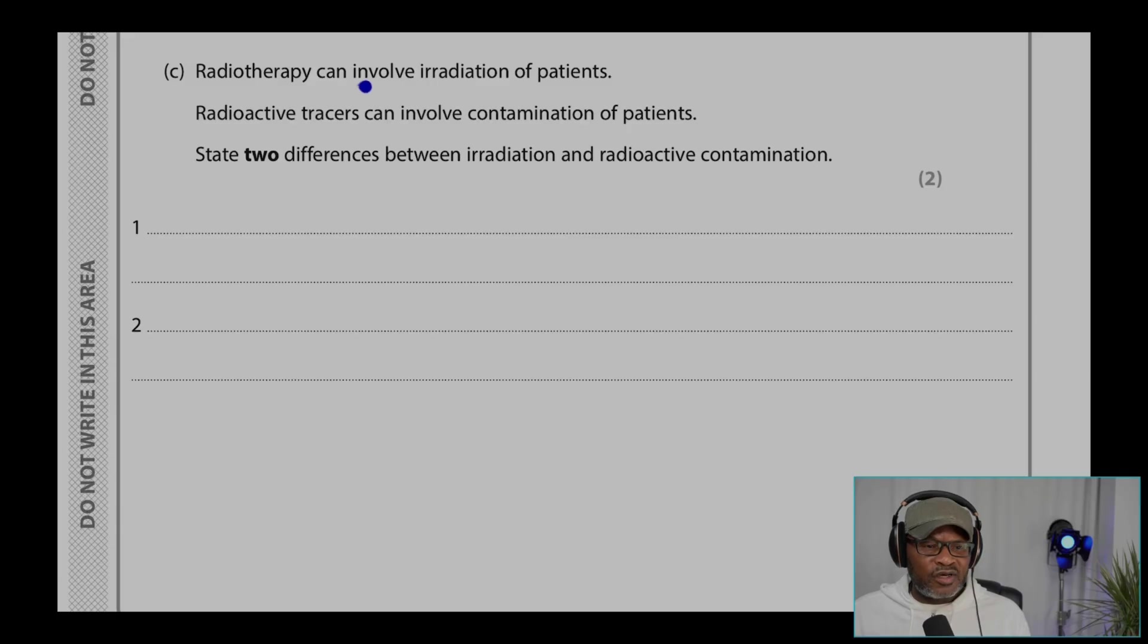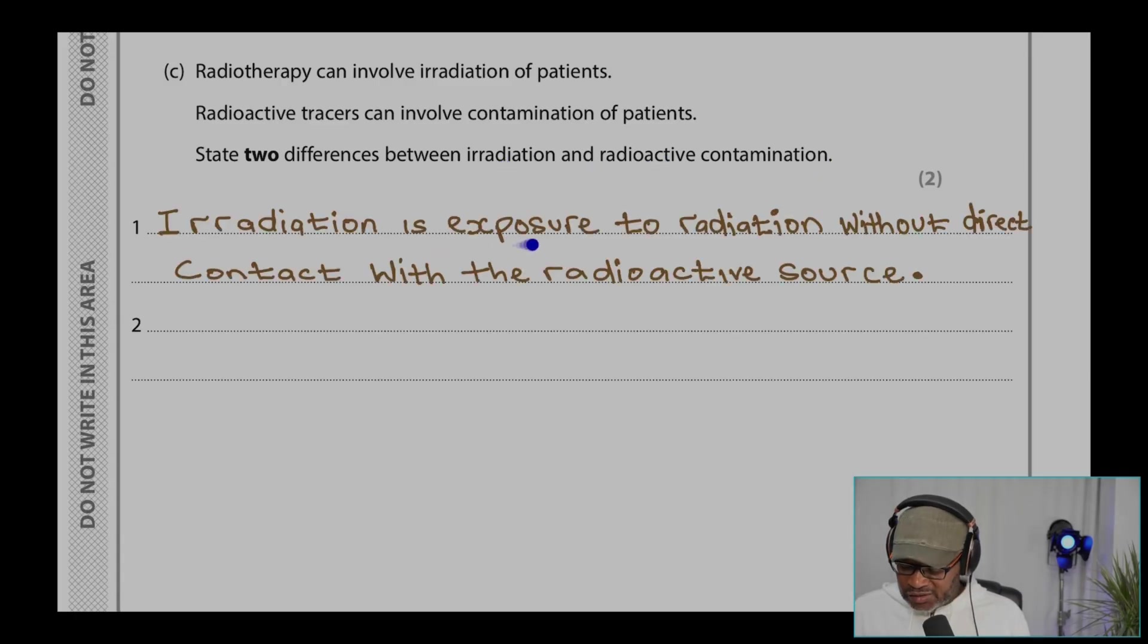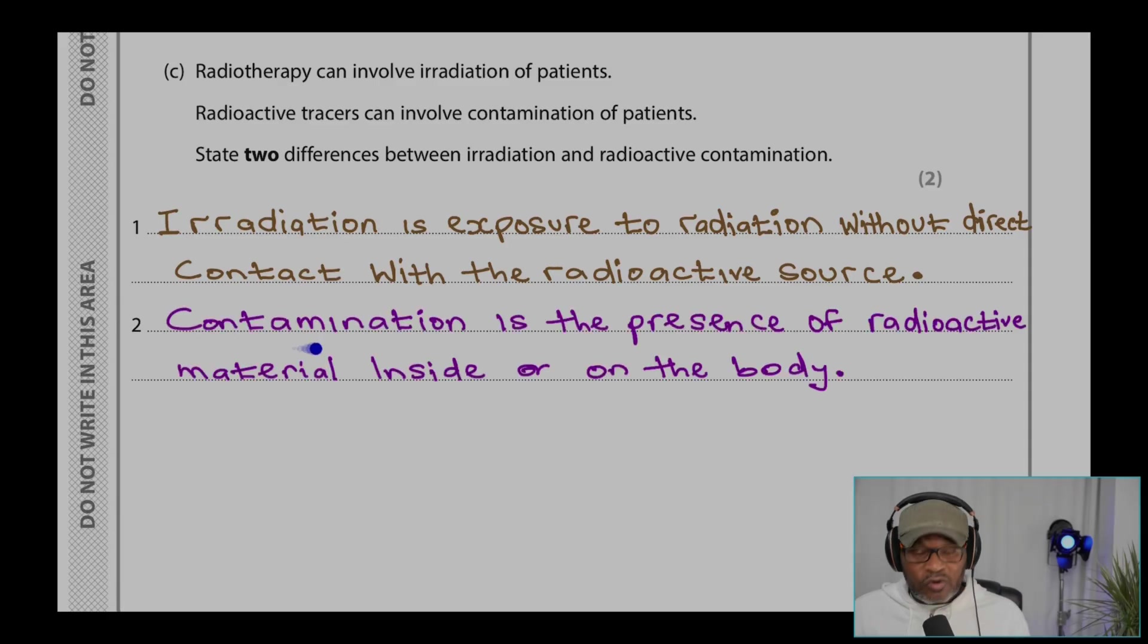Radiotherapy can involve irradiation of patients. Radioactive tracer can involve contamination of patients. State two differences between irradiation and radioactive contamination. Irradiation is exposure to radiation without direct contact with the radioactive source. Contamination is the presence of radioactive material inside or on the body.